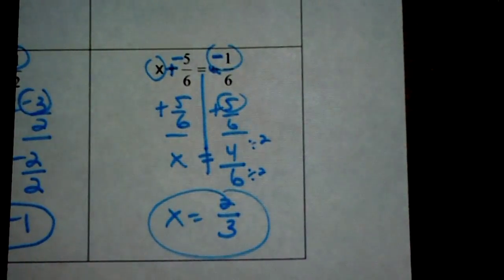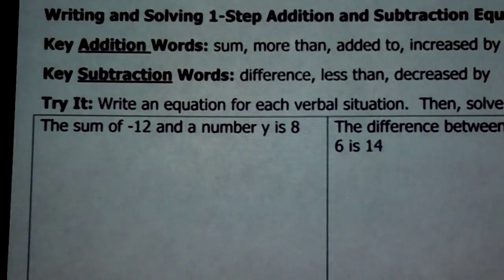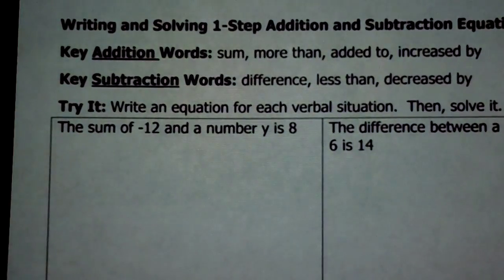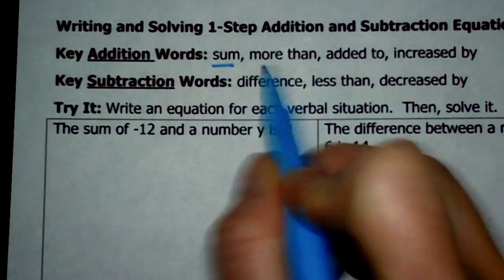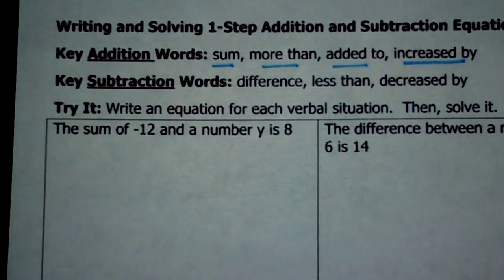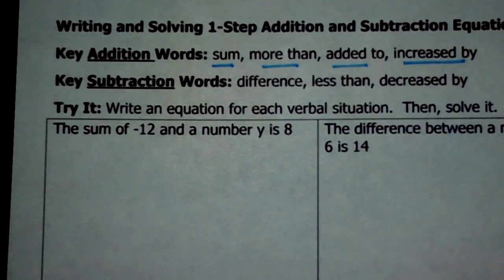Now let's get some practice writing equations and then solving them. We'll focus on key addition and subtraction words. Your key addition words: sum means you're adding; more than, added to, and increased by are all addition key words. If you see difference, less than, or decreased by, those are subtraction words. You're going to take a word statement, write an equation from it, and then solve it.